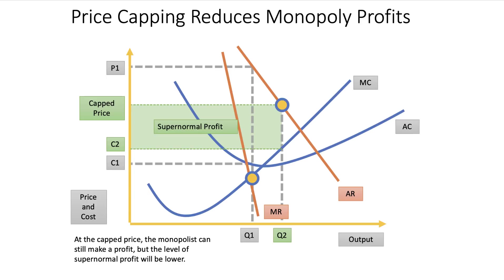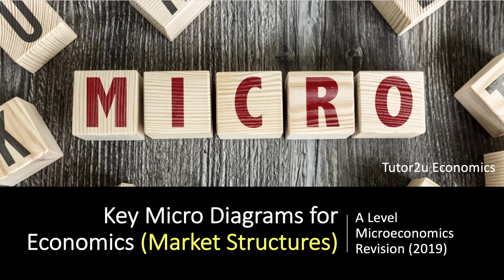All of this is in theory of course — you need to think about how firms actually behave in the market. So perfect competition, monopolistic competition, monopoly, oligopoly, contestable markets — this is a big core part of your micro theory, and I hope this video has been a rapid but useful journey through some of these diagrams.